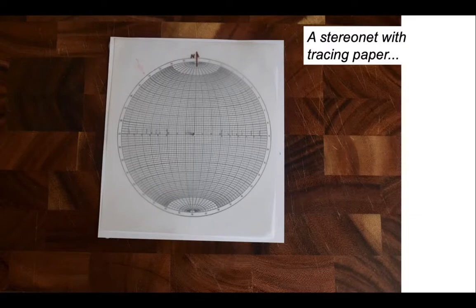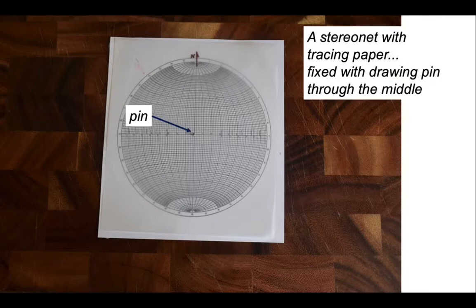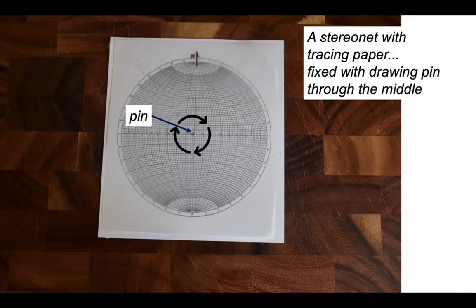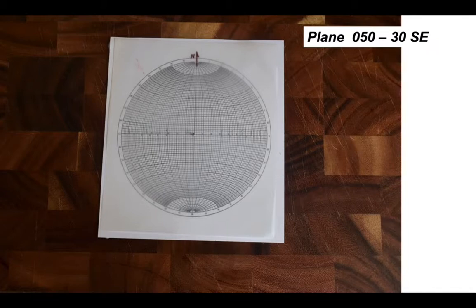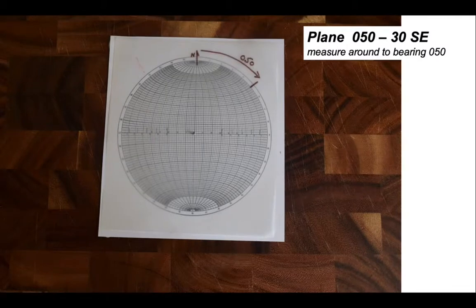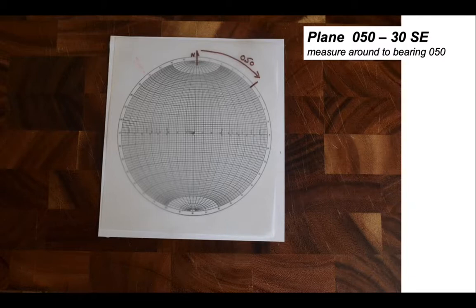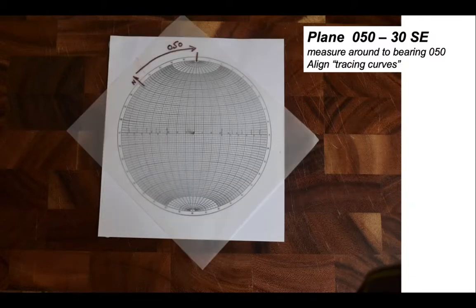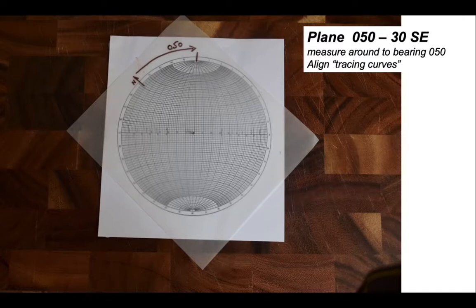Let's plot some of these things actually accurately using the stereographic projection. This is our stereonet with tracing paper on top. The pin to the middle anchors the tracing paper so that we can rotate it around, keeping the tracing curves below fixed. So let's plot this plane 050 30 dipping towards the southeast quadrant. We measure around the edge of the stereonet on a bearing of 050 measured around from north. We now align that with the tracing curves underneath so that the great circles cluster up on that bearing of 050.